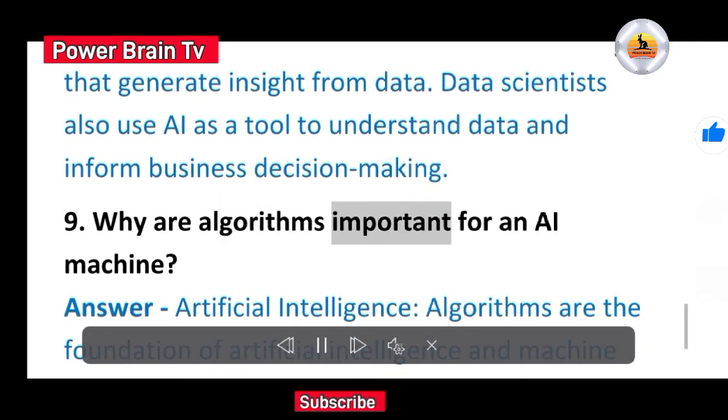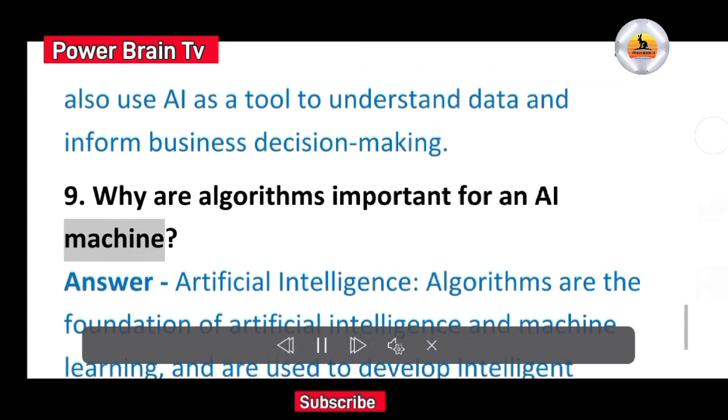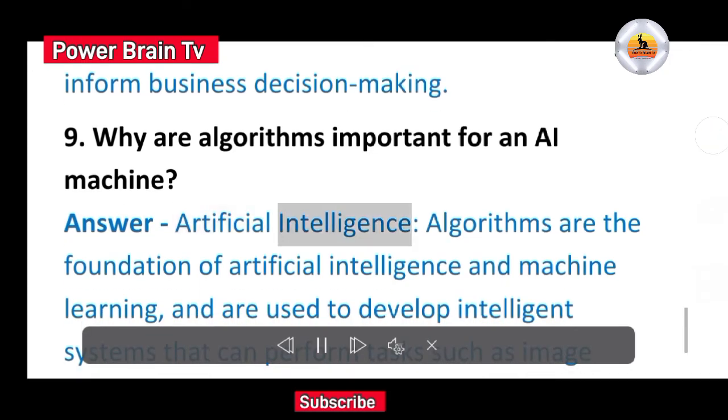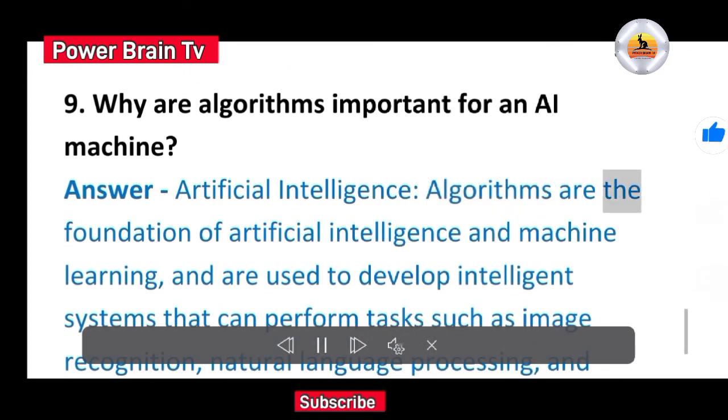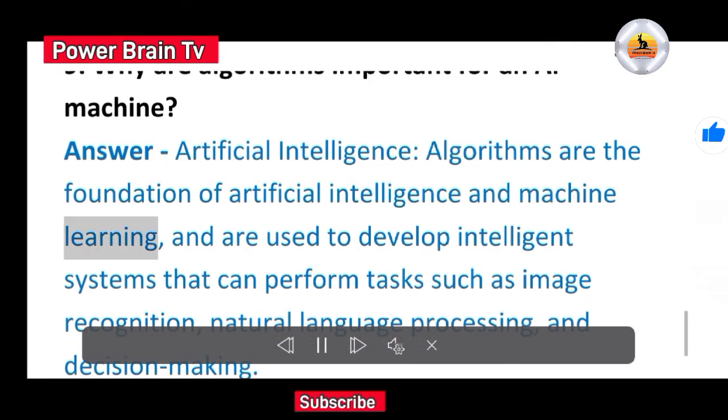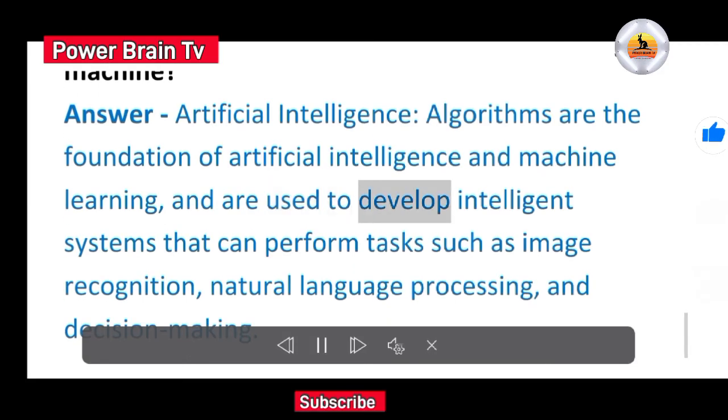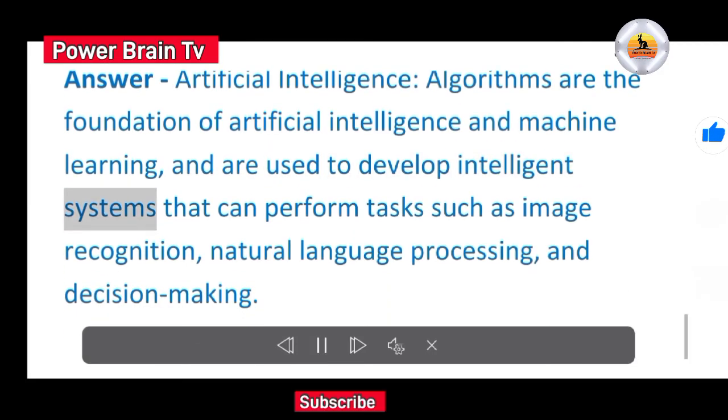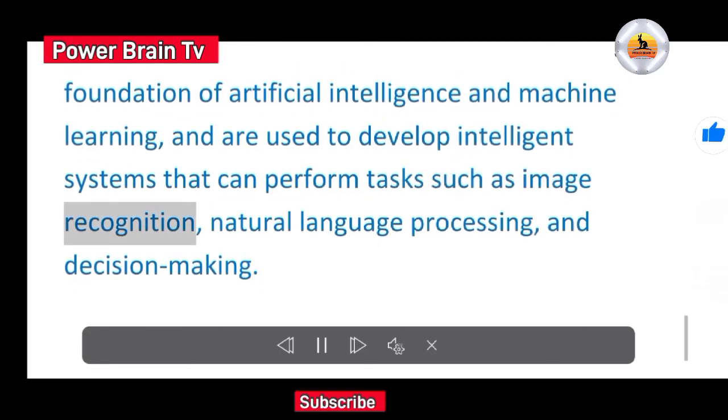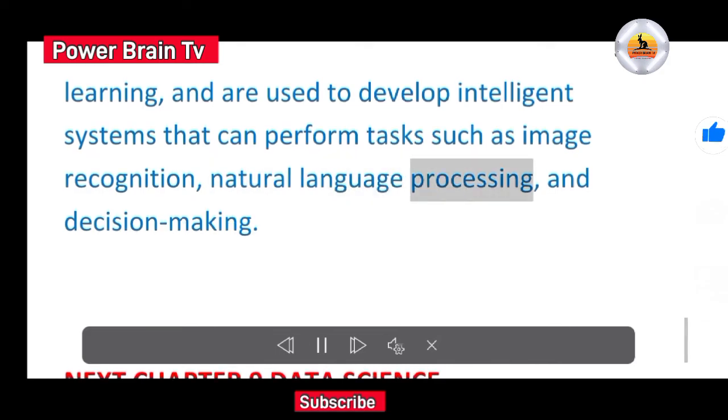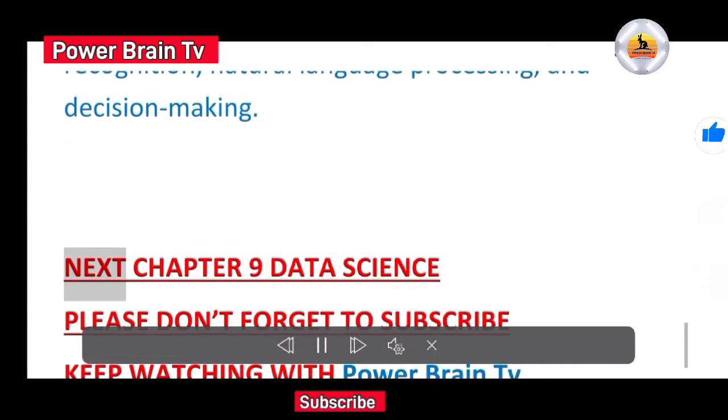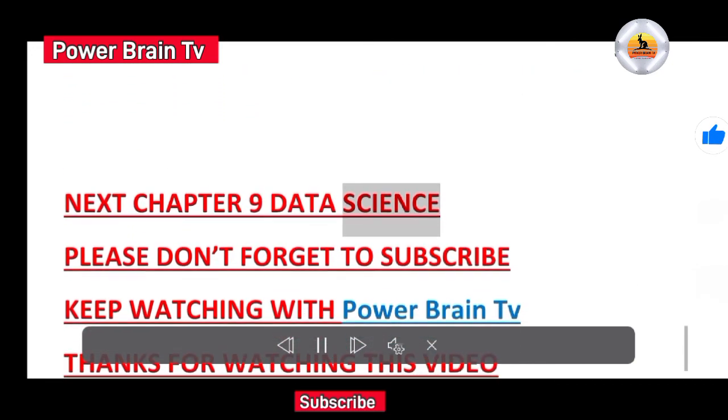9. Why are algorithms important for an AI machine? Answer. Artificial intelligence: Algorithms are the foundation of artificial intelligence and machine learning, and are used to develop intelligent systems that can perform tasks such as image recognition, natural language processing, and decision making.